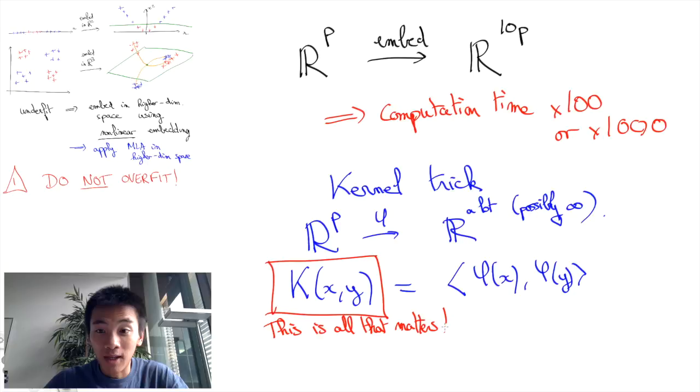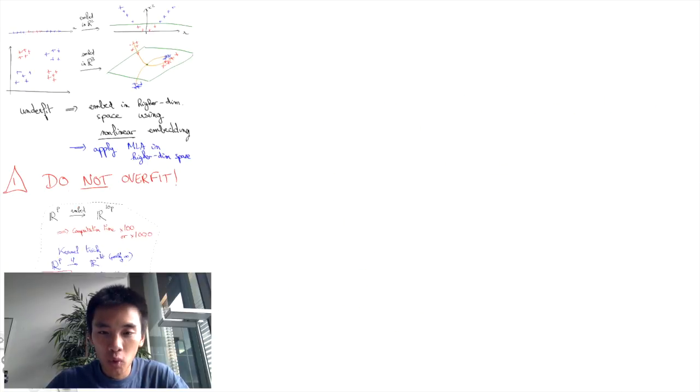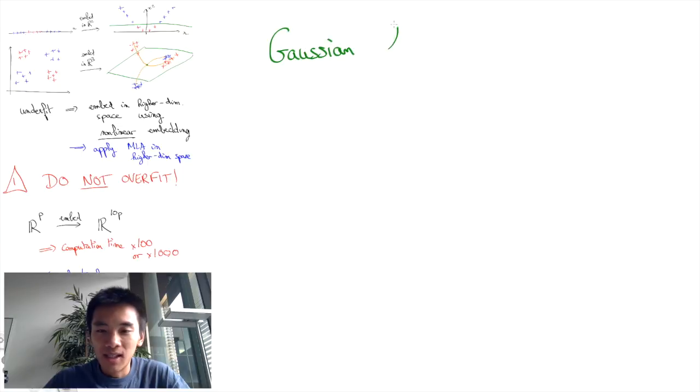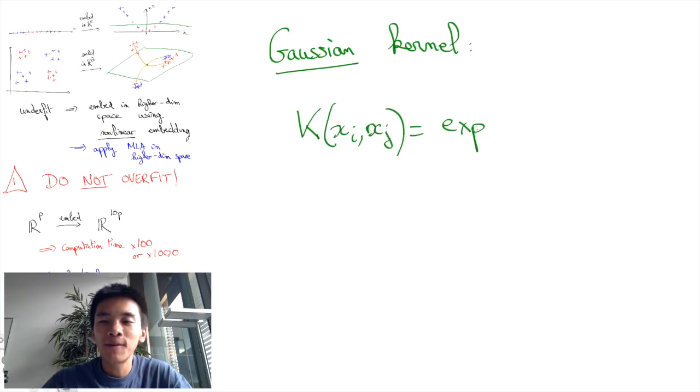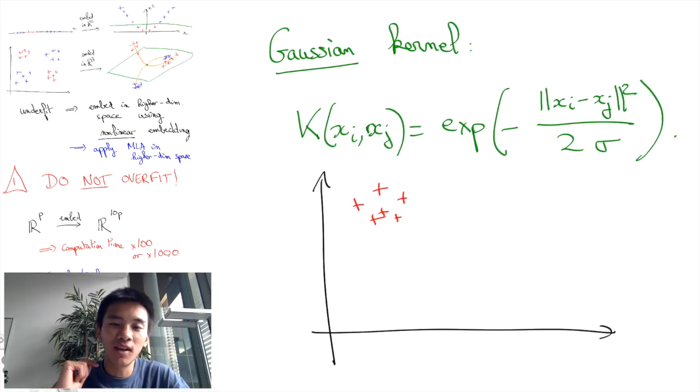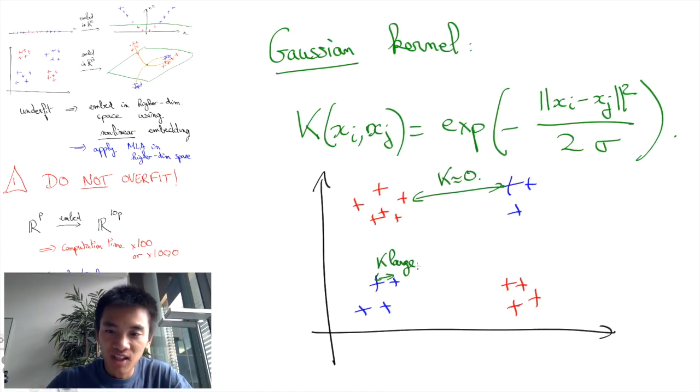An example of kernel K you can use in practice is the so-called Gaussian kernel, whose details I'll skip, but which eventually gives you the formula to compute k of xi xj as the exponential of minus the norm of xi minus xj squared divided by two sigma. Crucially, using this Gaussian kernel, you can both separate your data and use an efficient SVM algorithm.